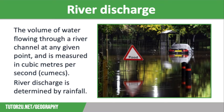Water returns to rivers by groundwater flow, through flow, or surface runoff, which is also known as overland flow. The speed of this return depends on a number of physical and human factors. River discharge is the volume of water flowing through a river channel at any given point and is measured in cubic metres per second, or cumecs.